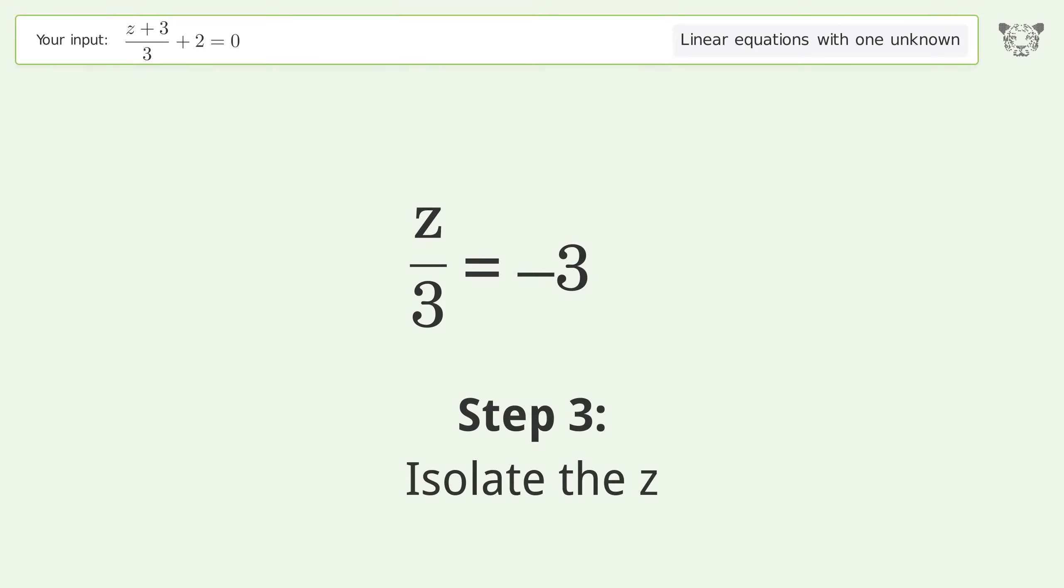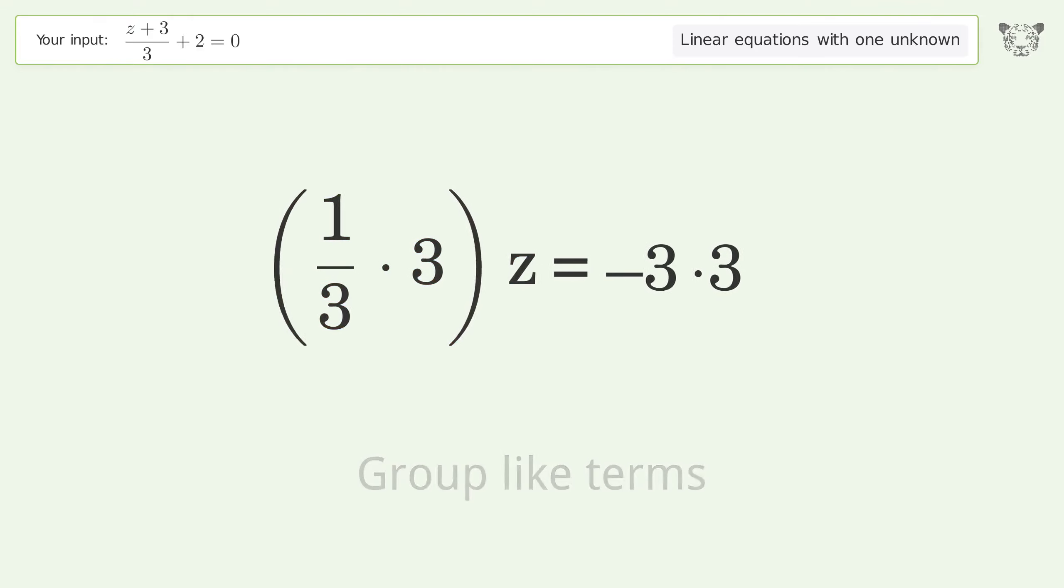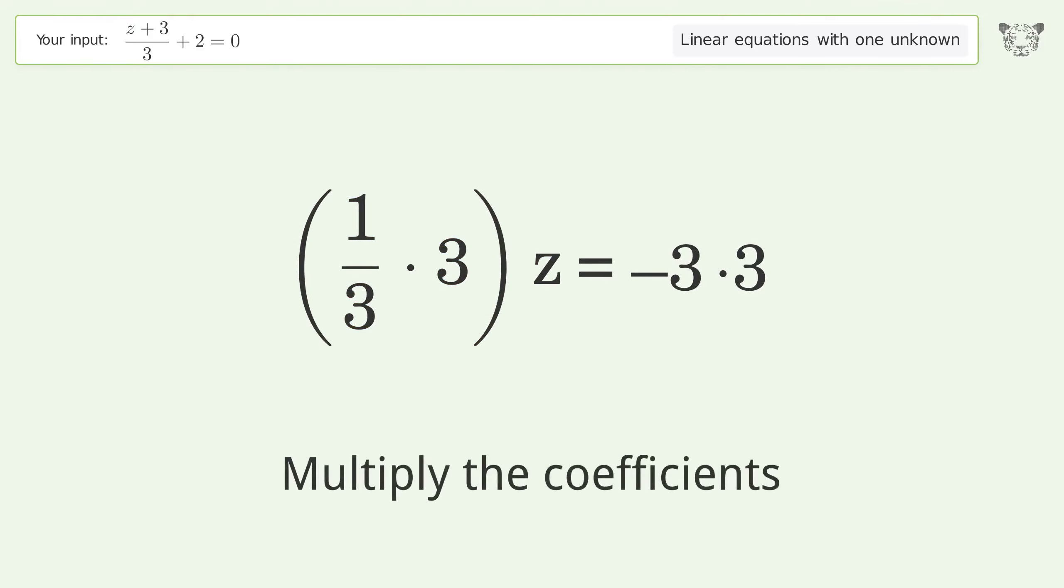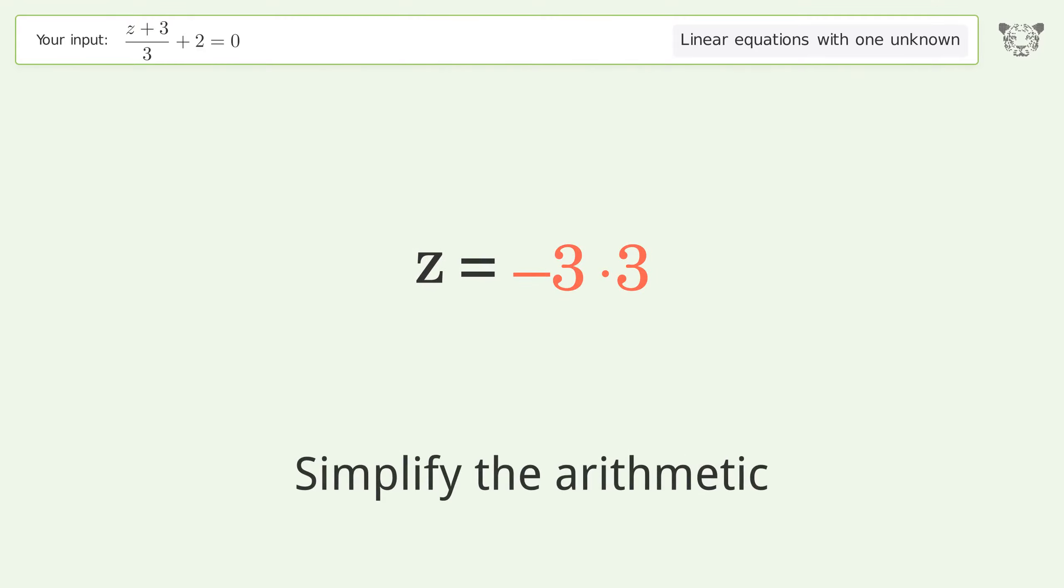Isolate the z. Multiply both sides by 3. Group like terms. Multiply the coefficients. Simplify the fraction. Simplify the arithmetic.